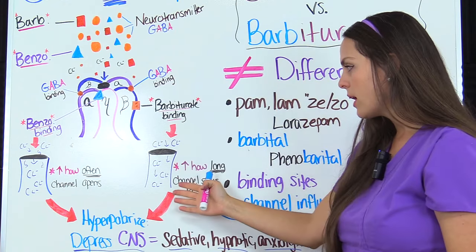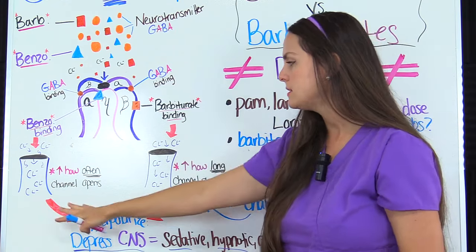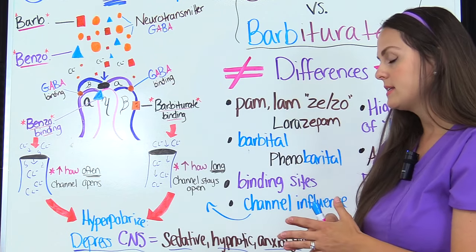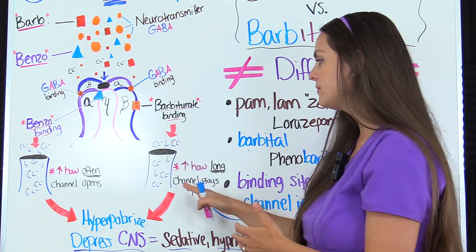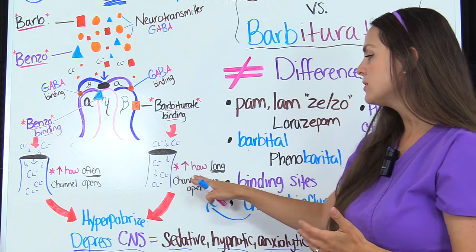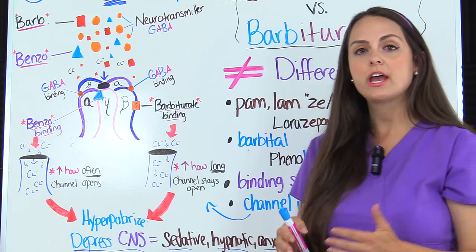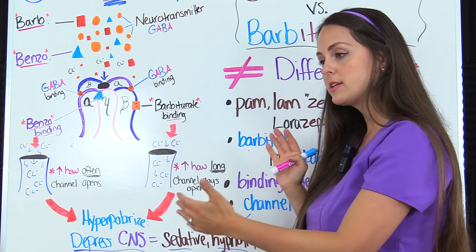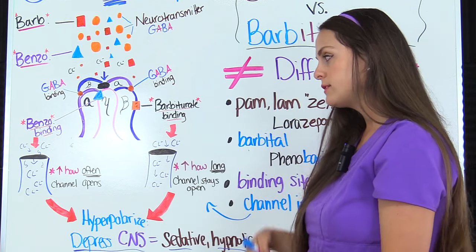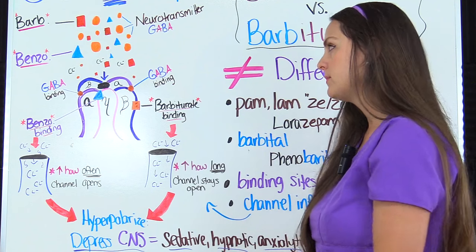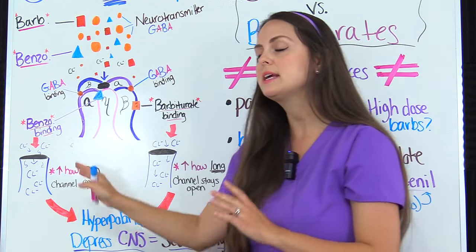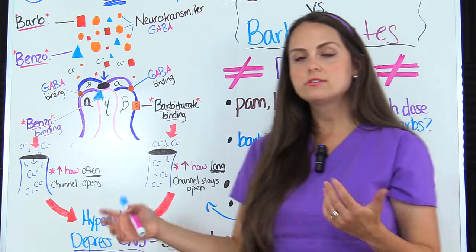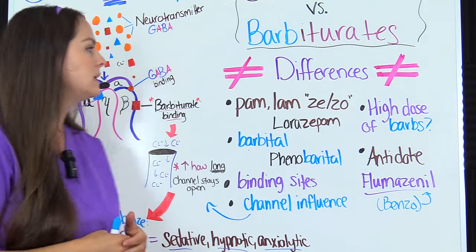The difference to remember is how barbiturates influence that channel: they increase how long the channel stays open — the duration — so chloride can flow through and hyperpolarize the cell. Over here with benzos, it was increasing how often the channel opens. So those are two key concepts you definitely want to keep in mind.